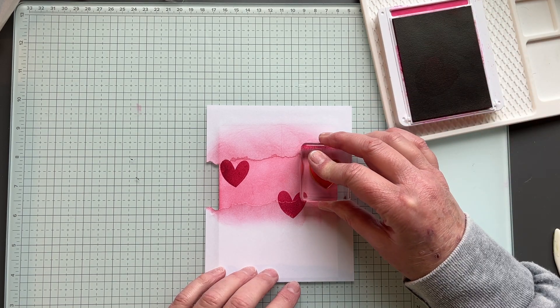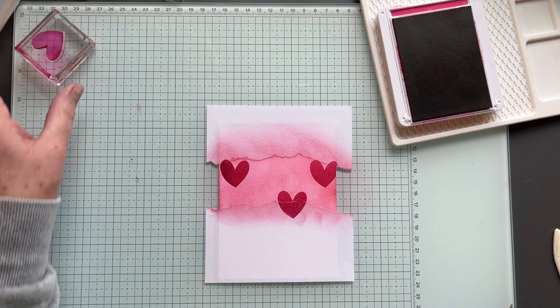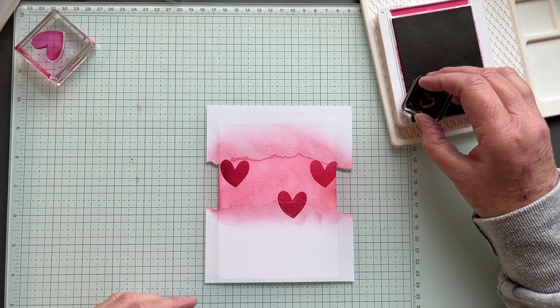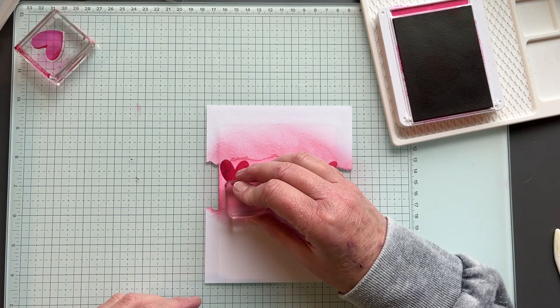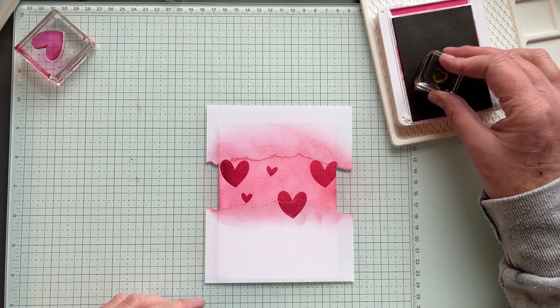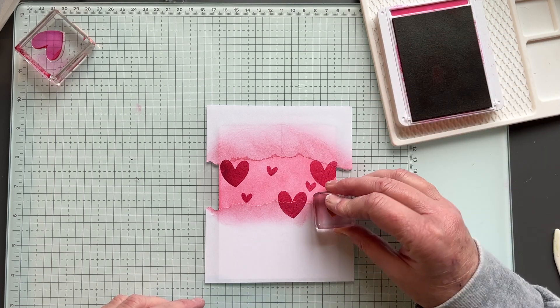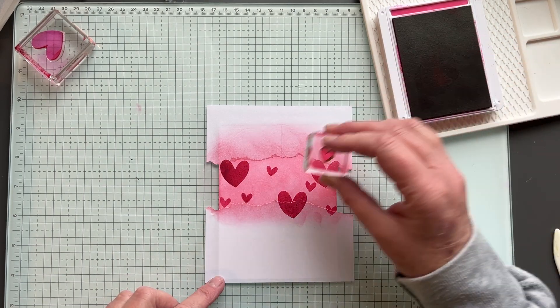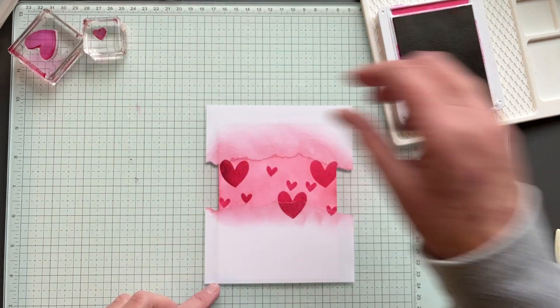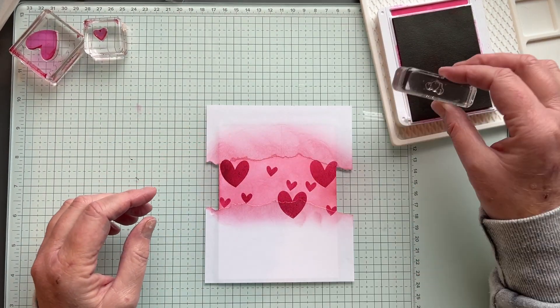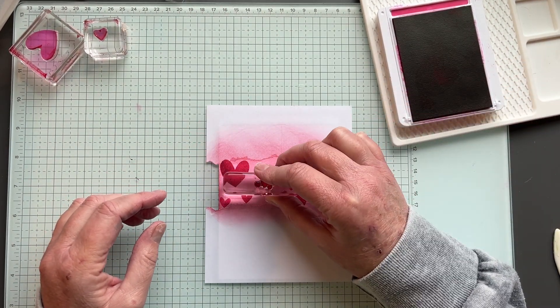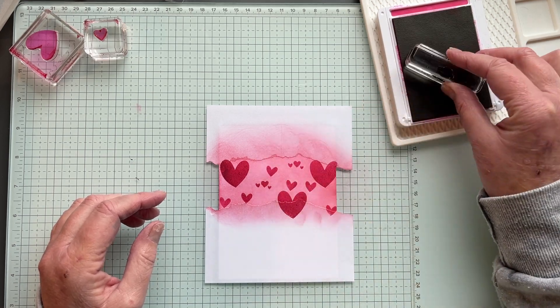And I'm just going to stamp three of the big hearts. And I'm going to come in with a tiny heart and just stamp some more, just filling in. There's no rhyme or reason, just wherever you would like it. And then this is the final group of three little hearts. Just like that.